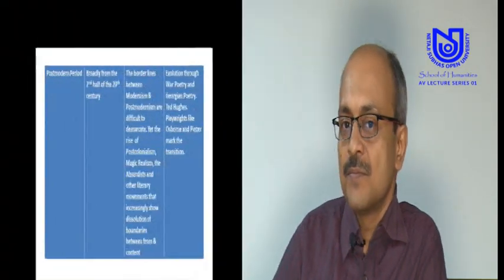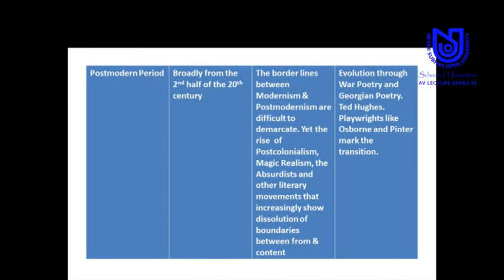The shift from modernism to postmodernism is a very tricky thing because it is difficult to fix an end date for modernism and a start date for postmodernism — the borderlines are actually blurred. But with the cessation of colonies and the coming up of new trends like magic realism and the rise of the absurd, what was happening cumulatively in literature was a dissolution of boundaries between so-called form and content. It is this dissolution which further goes on to produce other kinds of disillusionment that postmodernism registers as its own discourse.